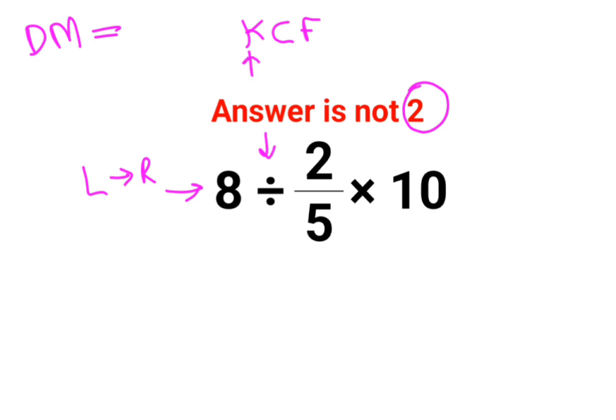K stands for keeping the first number as it is. C stands for changing the division sign to multiplication. F stands for flipping or taking reciprocal of the next number, which is 2 by 5. Reciprocal of that would be 5 by 2 multiplied by 10.